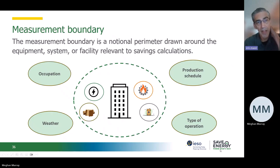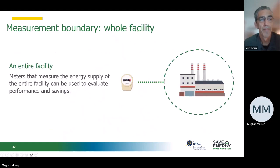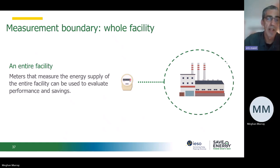Some basics of M&V: think about the measurement boundary — what is the system boundary? It's fundamental to science and engineering. One of the common choices of measurement boundary is whole facility. That's almost always the utility meter — the natural gas company has a gas meter, the electric company has an electric meter. There's data already available there that can be used for M&V purposes. We call that a whole facility measurement boundary.